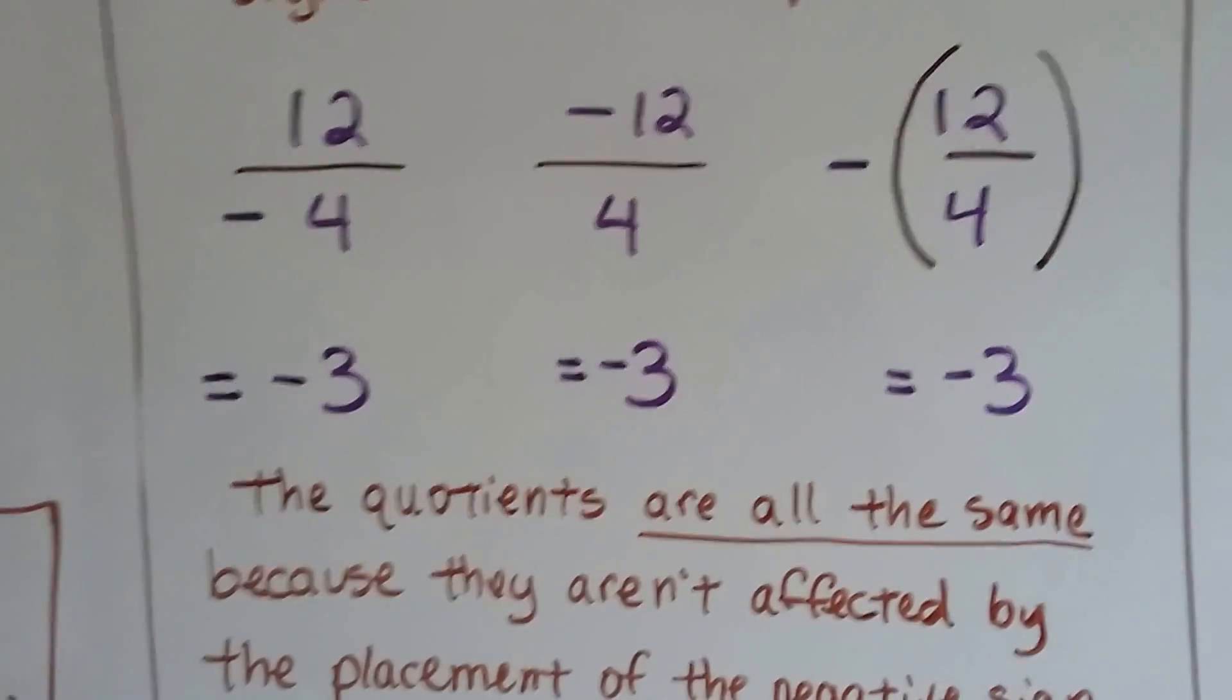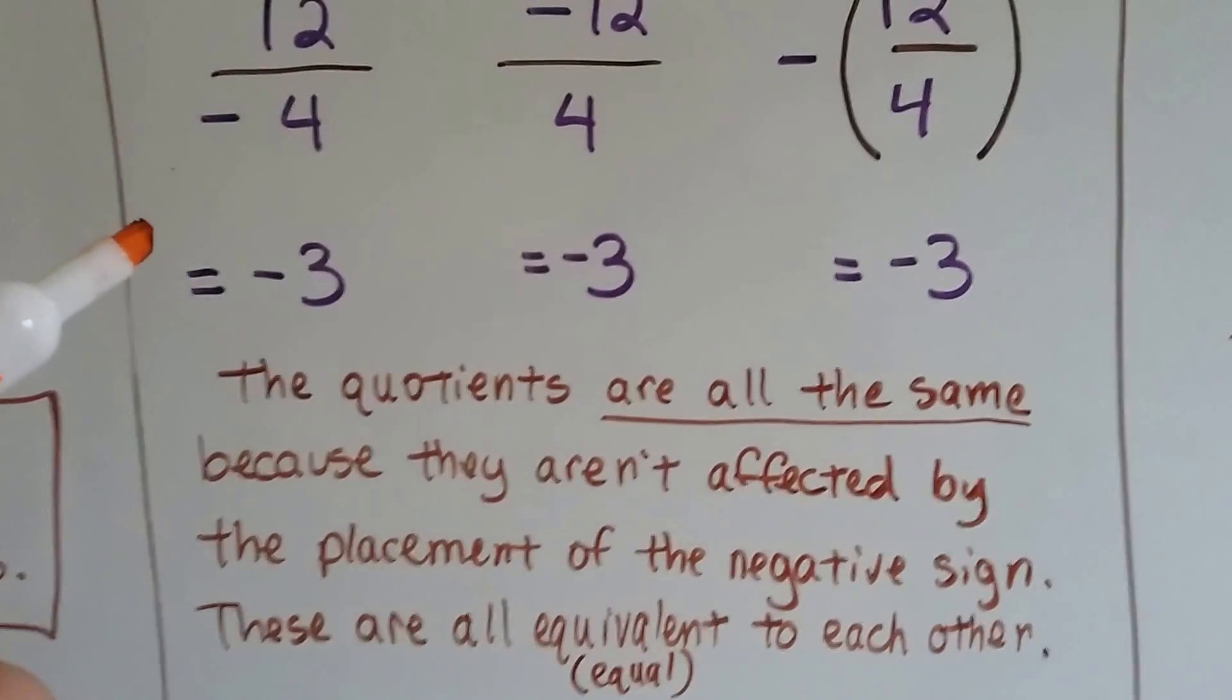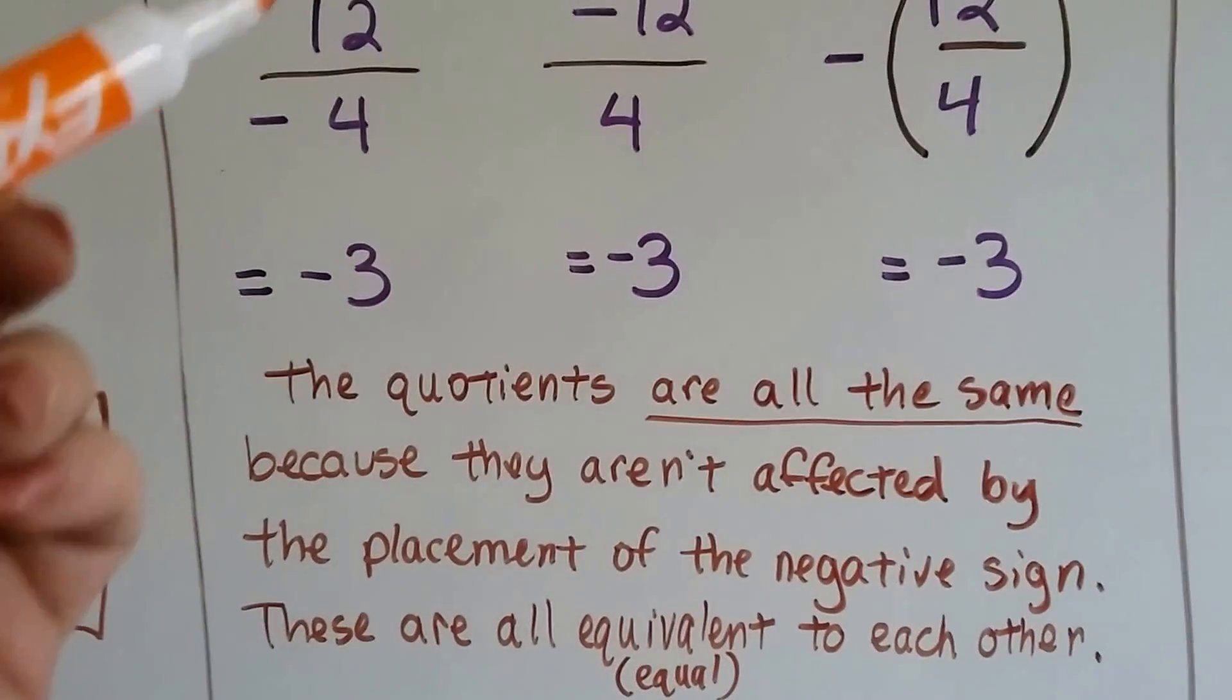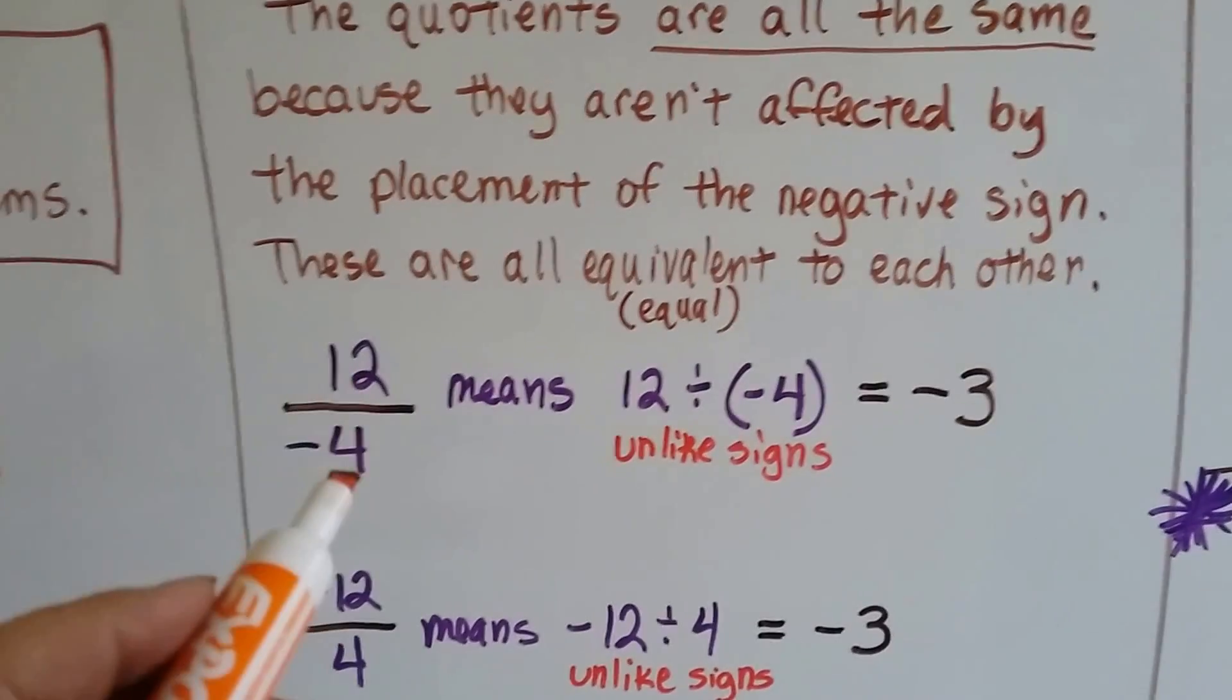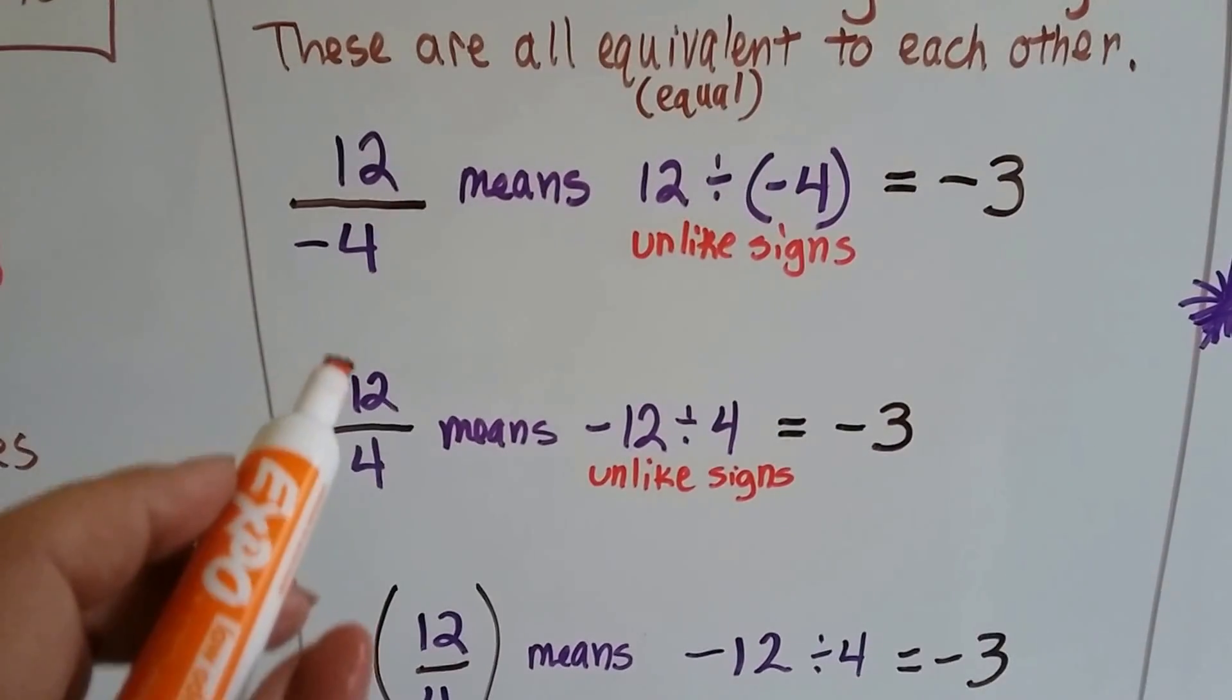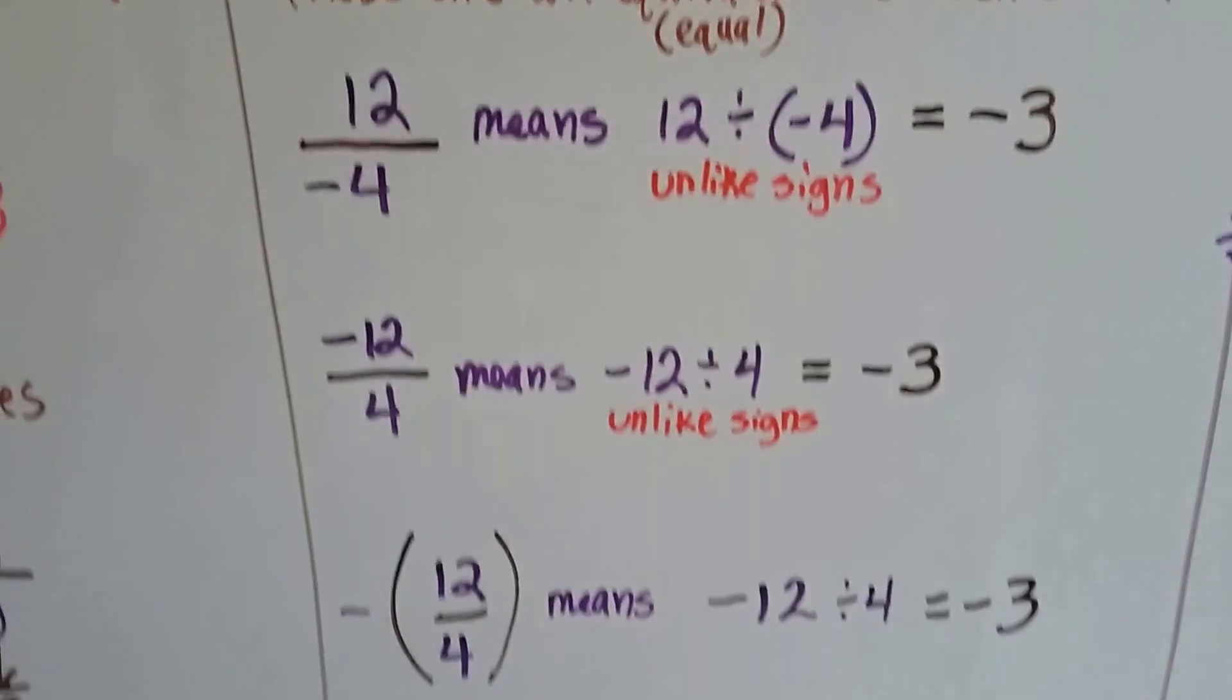The quotients are all the same because they aren't affected by the placement of the negative sign. They're all equivalent to each other. You've got positive divided by a negative - those are unlike signs. Positive 12 divided by negative 4, unlike signs would make negative 3. Negative 12 divided by positive 4, those are unlike signs, so it's negative 3.